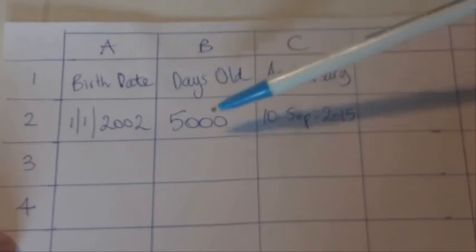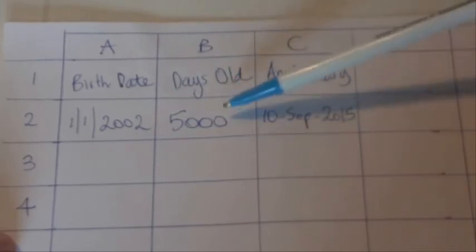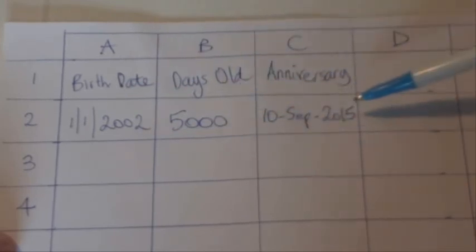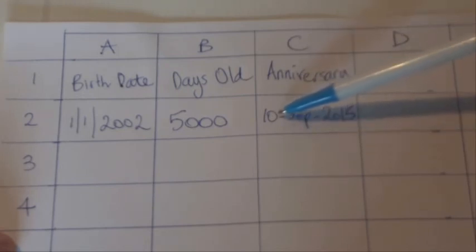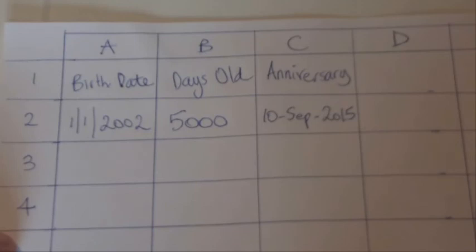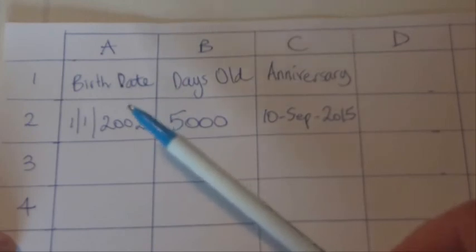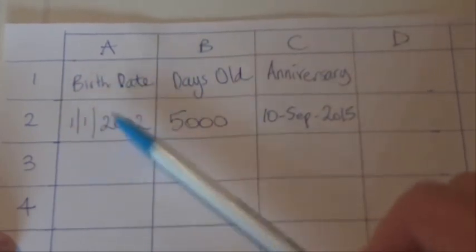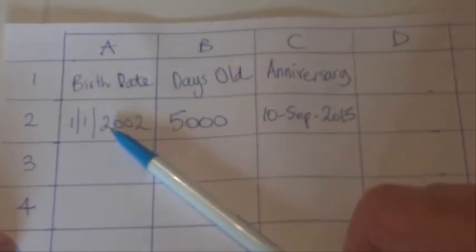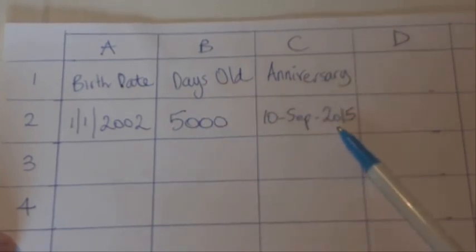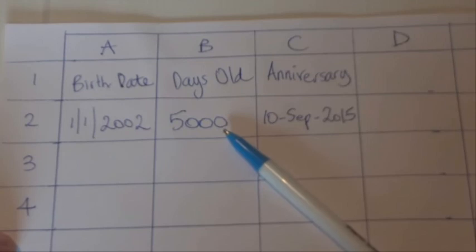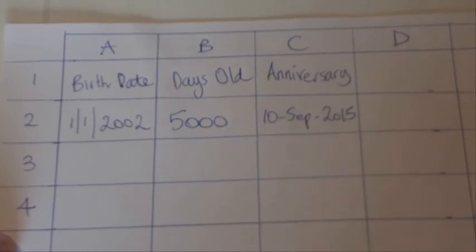If you were born on the 1st of January 2002, your 5,000 day old anniversary date that you can celebrate being 5,000 days old is on the 10th of September 2015. The great thing about using a spreadsheet is you can enter your actual birth date, put your 5,000 in, and it'll tell you what day you can celebrate being 5,000 days old.